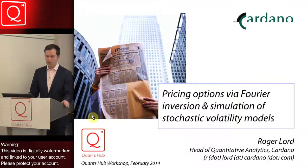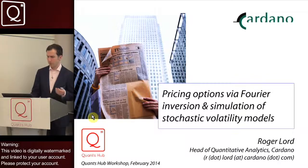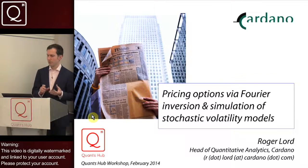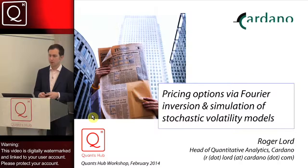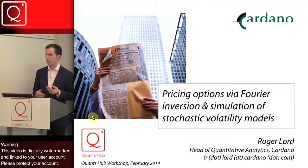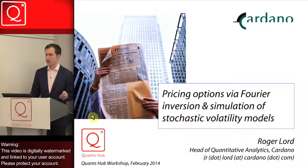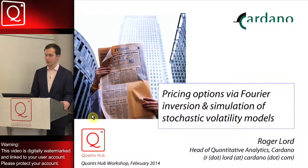We all know the deficiencies of Black-Scholes and I won't focus too much on those today. We all know for example that there is smile and skew present in the equity, interest rate, and FX volatility markets. So clearly we have to use an alternative model which has fatter tails, implies a skew or smile, and can be fitted to the prices observed in those derivatives markets.